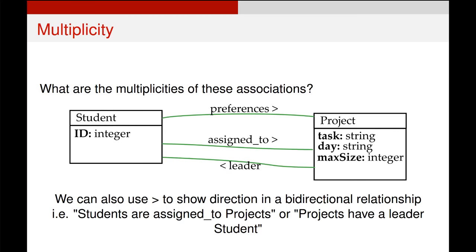For the more complicated multiplicities, however, quite often in class diagrams you'll see a little arrow attached to the descriptor of these associations, and that just gives some information about the direction of a relationship. For example, a student will have a list of preferences of projects, and that means the preferences relationship will appear in student. It won't need to appear in project, even though it is a bi-directional relationship. It's the same as the assigned to. Students will need to know what projects they're assigned to, but it is a relationship between student and project, so it will appear over here.